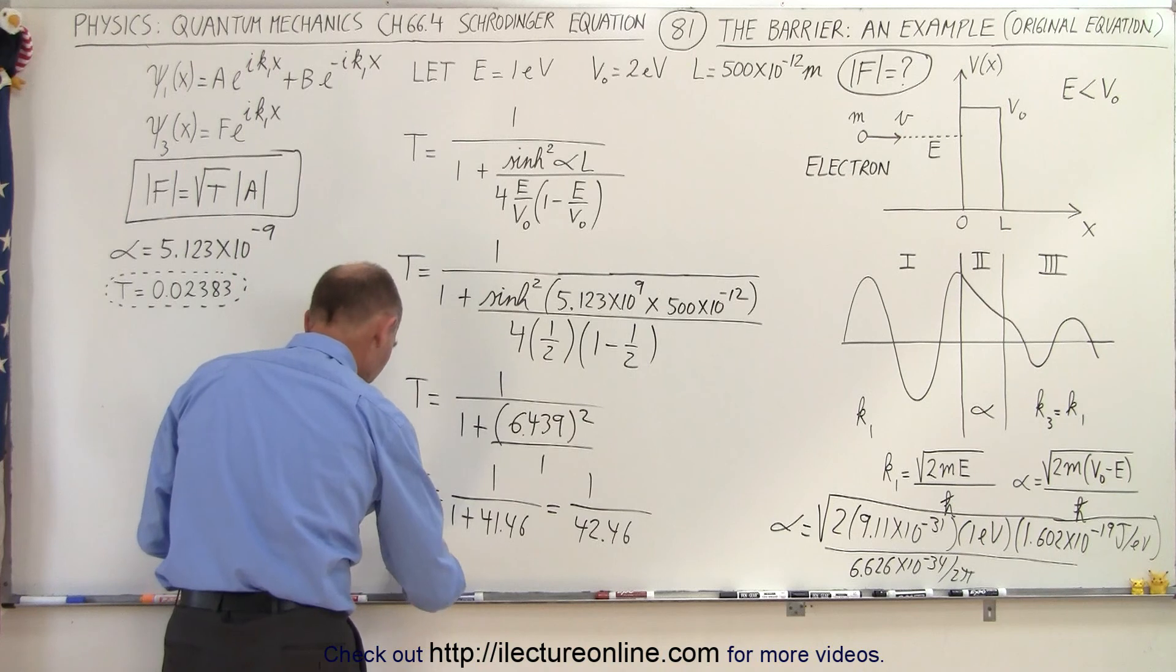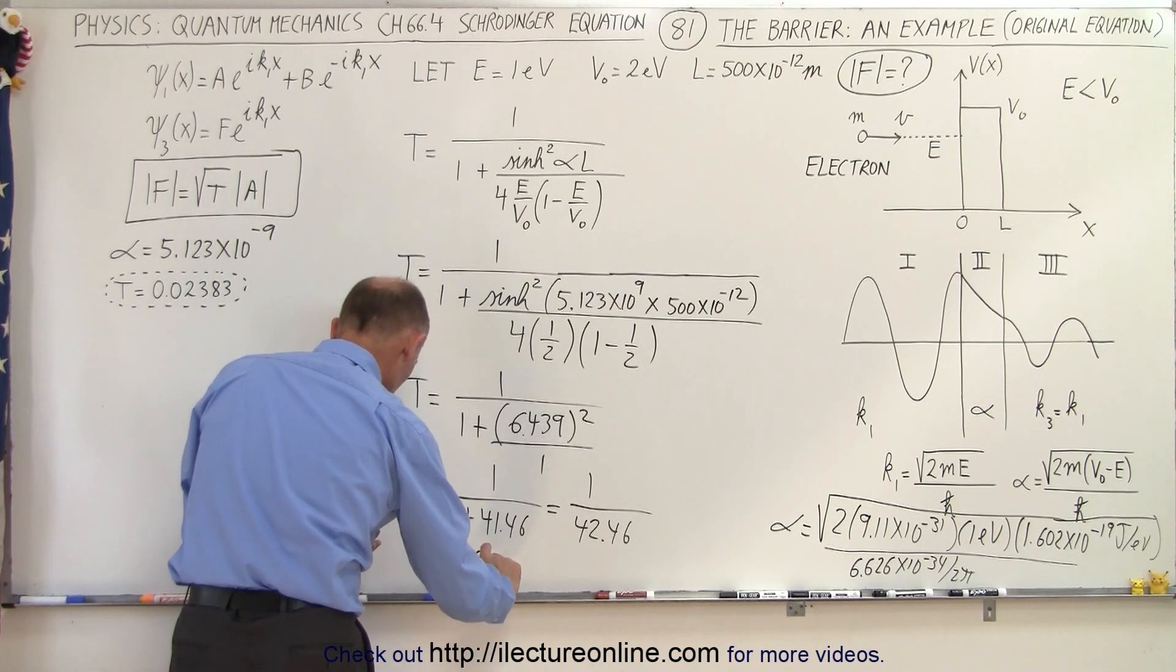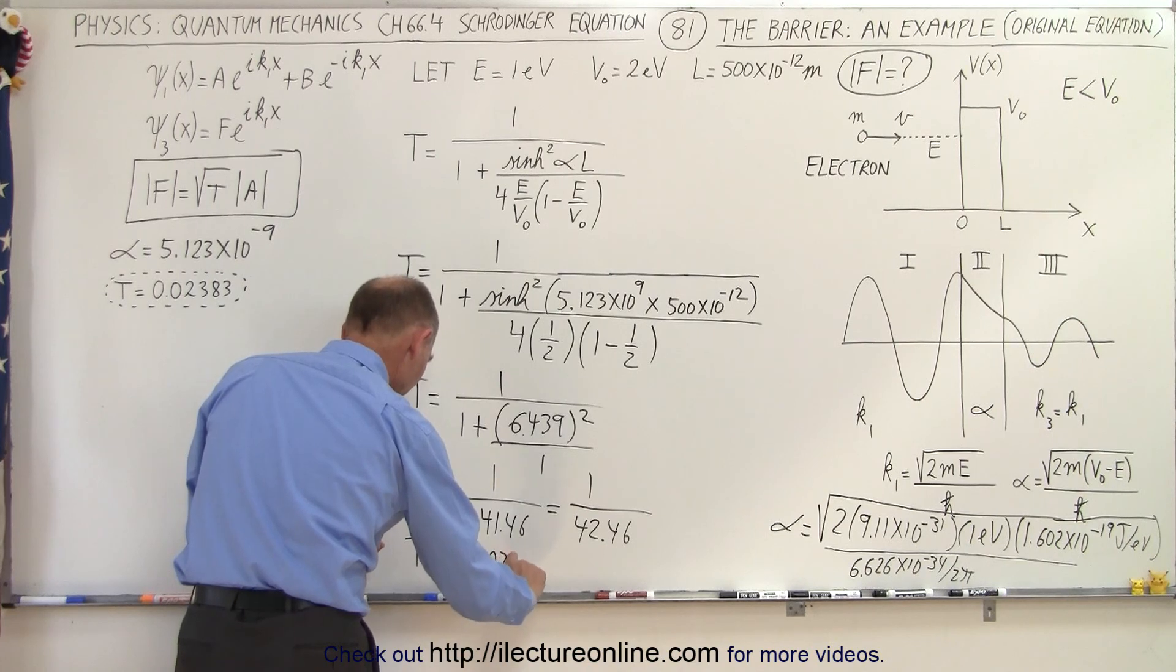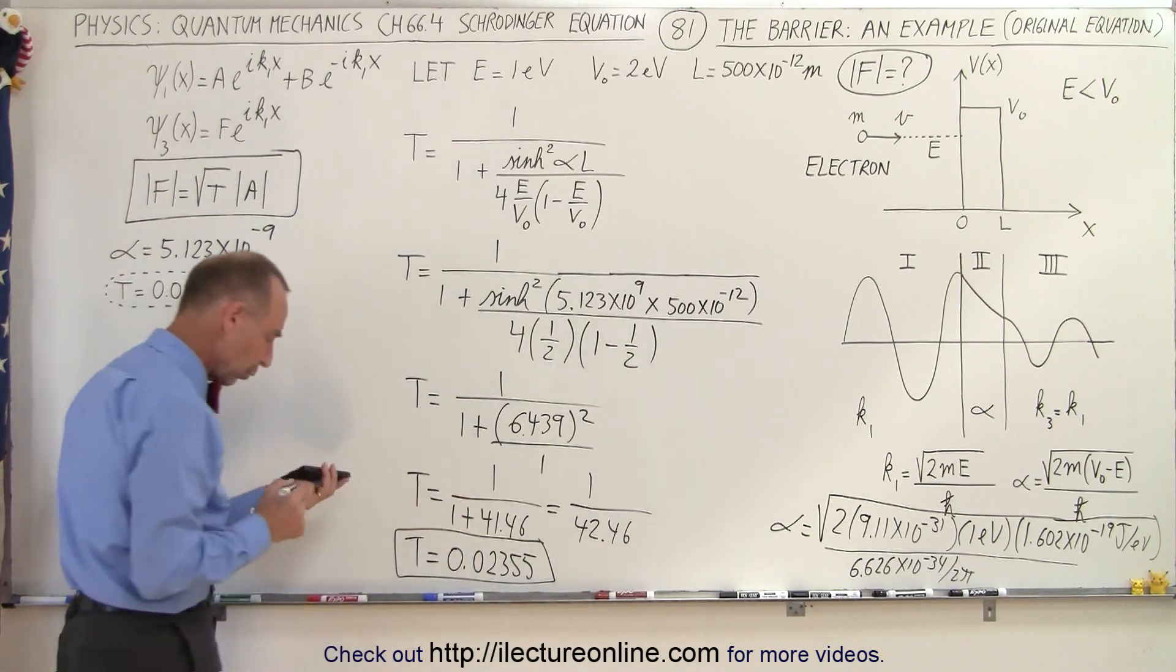So we get the transmission coefficient is equal to 0.02355, so that's what we get with the original equation not the simplified equation.